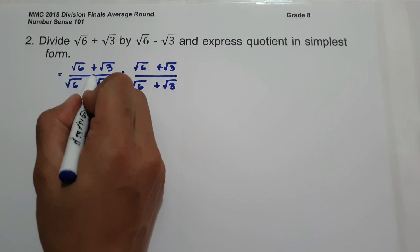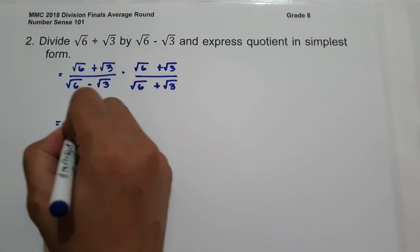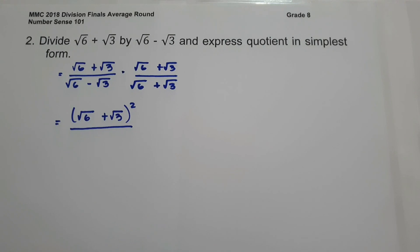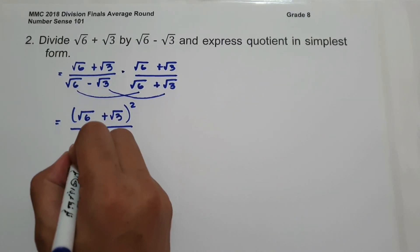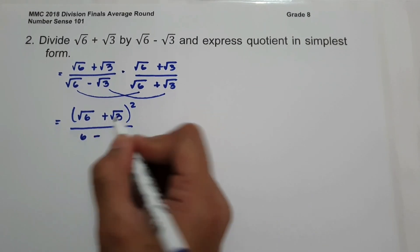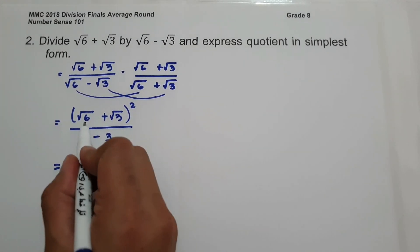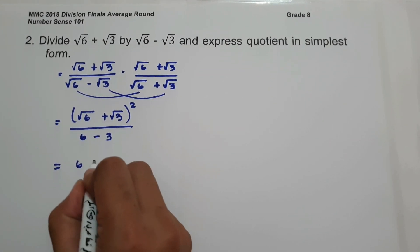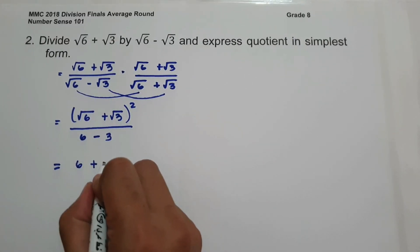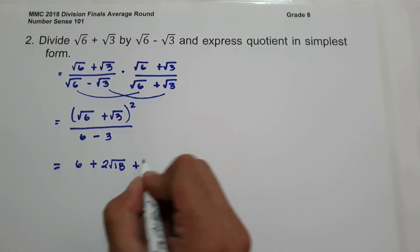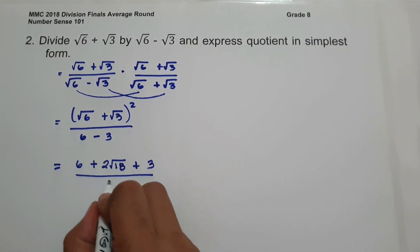So we have square root of 6 plus square root of 3 multiplied by itself, that is square root of 6 plus square root of 3 squared. Whenever we multiply a conjugate, we multiply first term to first term and last term to last term: square root of 6 times square root of 6 is 6, and positive times negative is negative, so square root of 3 times square root of 3 is 3. Then we have square root of 6 times square root of 3, that is square root of 18, multiplied by the constant 2, giving 2 square root of 18. The denominator gives 6 minus 3, that is 3.